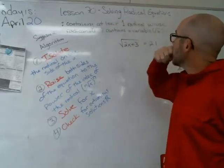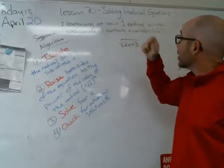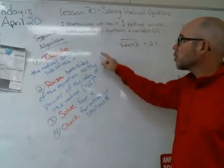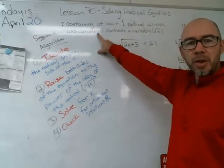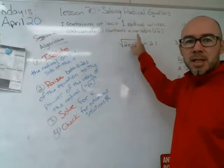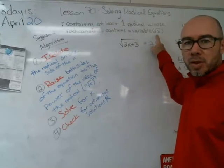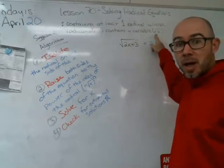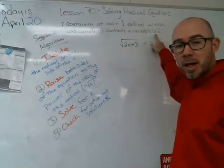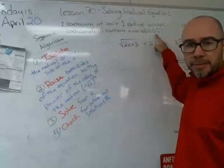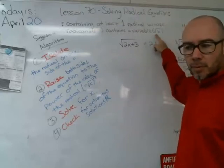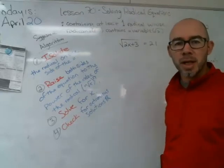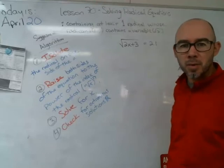What's a radical equation? It contains at least one radical — that checkmark symbol — whose radicand contains a variable. So you're going to have a problem with something underneath an X, Y, M, or N underneath the radical sign, and it's an equation, so there's going to be an equal sign in there as well.